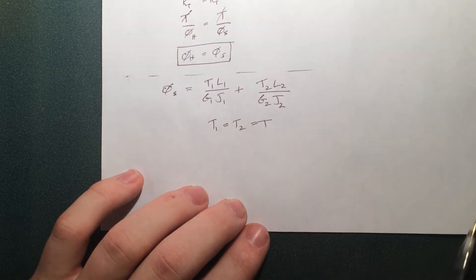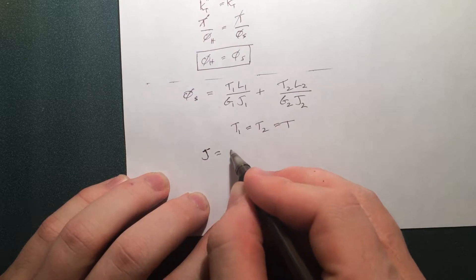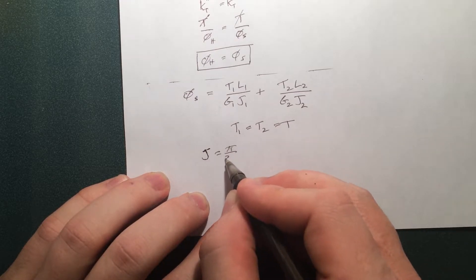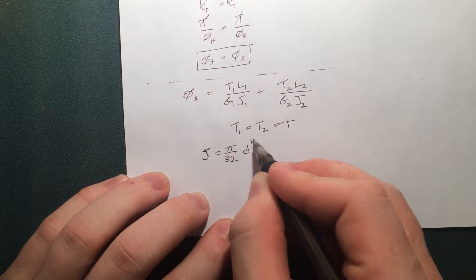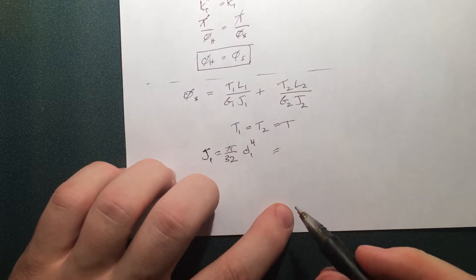Next thing is J1, J2. Let's just go ahead and calculate those. So we know J is pi by 2, or pi by 32, D to the 4. That's the generic equation. So J1 is the components of 1.